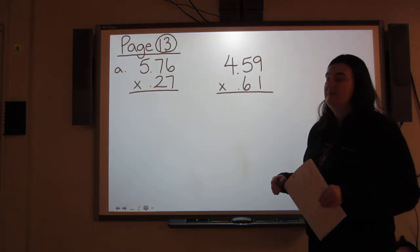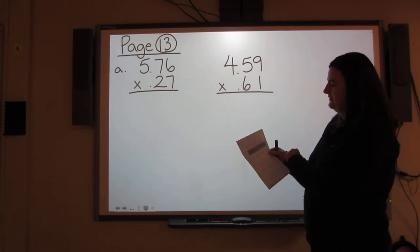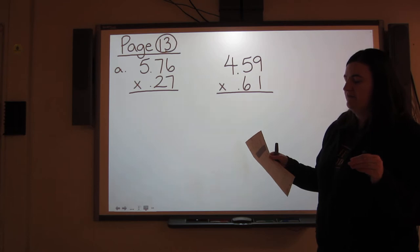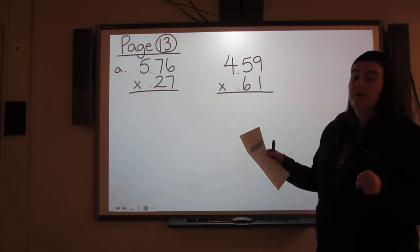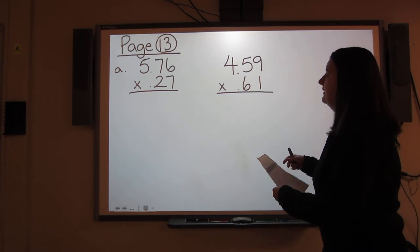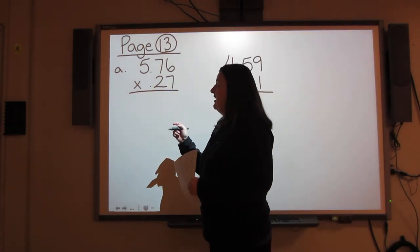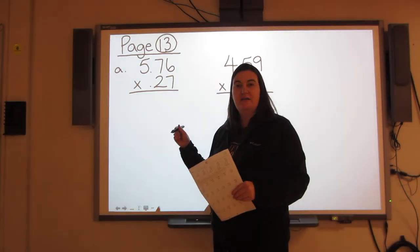Let's answer these questions. On page 13, you'll notice the whole row is row A. They've already answered the first question in row A, so we're going to answer the second and the third question from row A. 5.76 times 0.27.